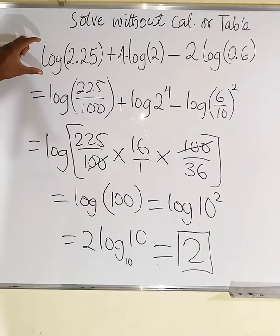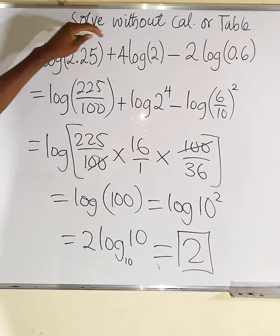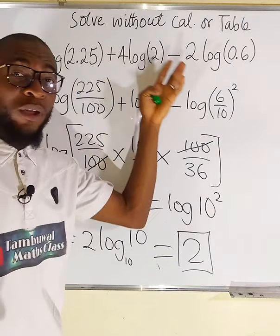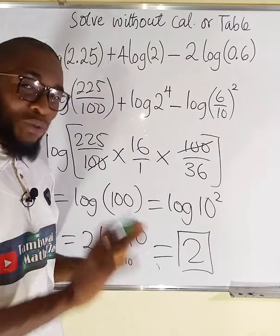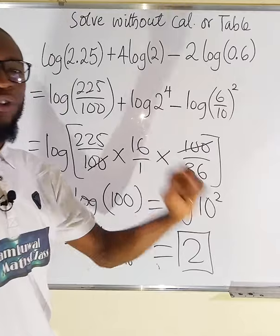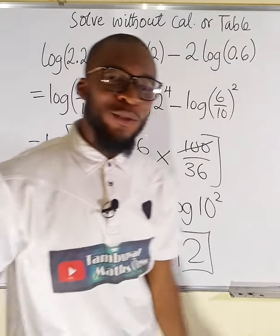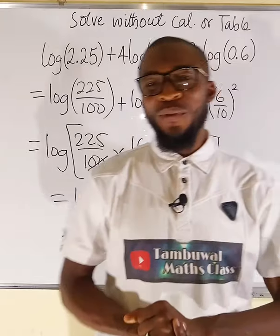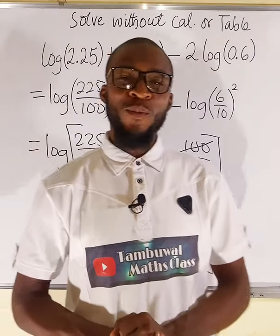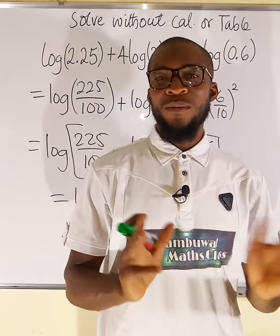The whole of this expression here, log of 2.25 plus 4 multiplied by log of 2 minus 2 multiplied by log of 0.6, is nothing but equal to 2. And this is all I have for you today. Thank you for watching. Do share to your learning colleagues and don't forget to subscribe to my YouTube channel for more exciting videos. Bye bye.